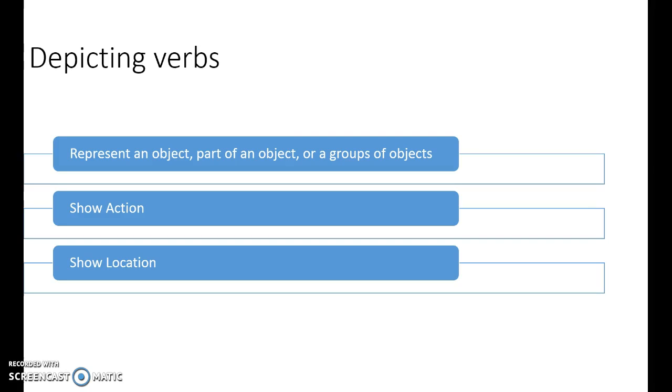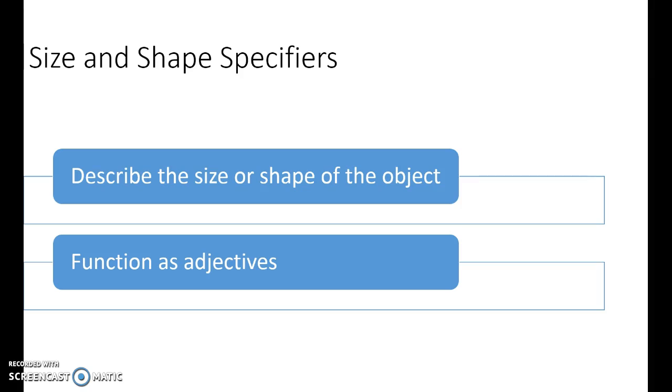They're best thought of as verbs because that's what they really are. They're verbs that show or depict what something looks like, either by one object, many objects, or part of an object. So when we think of classifiers, one part of the term classifier really has to do with this depicting verb.